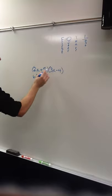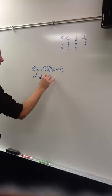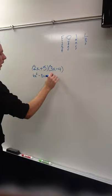And then, inner, you get 5 and 3x, so that's plus 15x. And then, last is 5 and negative 4, so you get minus 20.